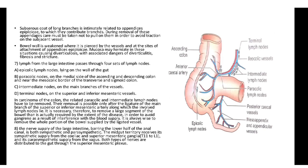The sub-serous coat of long branches is intimately related to the appendices epiploicae, to which they contribute branches. During removal of these appendices, care must be taken not to pull on them to avoid traction on the subjacent vessels. The bowel wall is weakened where it is pierced by vessels and at the site of attachment of appendices epiploicae; mucosa may herniate causing diverticulosis with associated dangers of diverticulitis, fibrosis, and stricture. Lymph from the large intestine passes through four sets of lymph nodes: epicolic nodes on the wall of the gut, paracolic nodes, intermediate nodes on main branches of vessels, and terminal nodes on the superior and inferior mesenteric vessels.